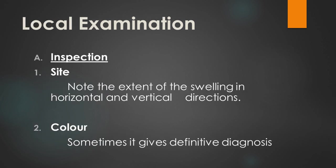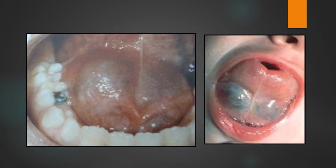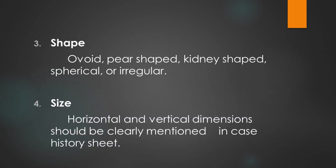Next we come to the local examination, which includes inspection. The site of the swelling is seen, as well as the extent in horizontal and vertical directions. Color sometimes gives a definitive diagnosis — a bluish color swelling suggests a ranula, reddish swelling is seen in hemangioma, and a black swelling in melanoma and benign nevus. A bluish colored swelling at the floor of the mouth can be described as a ranula. The shape of the swelling can be ovoid, pear shaped, kidney shaped, spherical, or irregular.